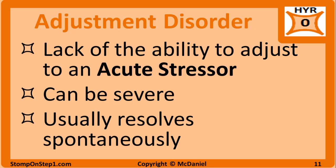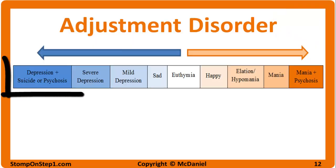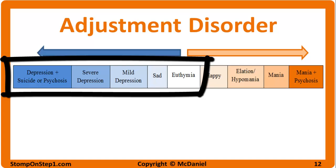Adjustment disorder is sometimes referred to as situational depression. It is a lack of ability to adjust to an acute stressor that leads to depressive symptoms out of proportion to the situation. These symptoms can be severe enough to lead to a loss of function and suicide. Examples of acute stressors include marital problems, moving to a new city, being diagnosed with a fatal disease, or getting fired. You can think of adjustment disorder as MDD caused by a situation. This disorder usually resolves when the stressor is removed or resolves spontaneously over a few months as the person adapts. On our continuum, adjustment disorder covers the same range as MDD.